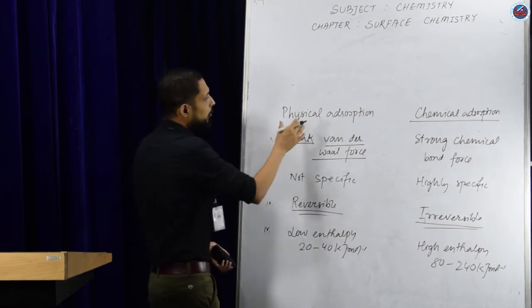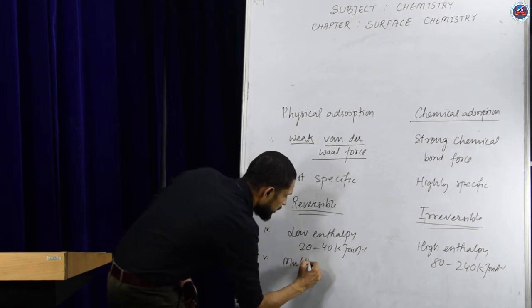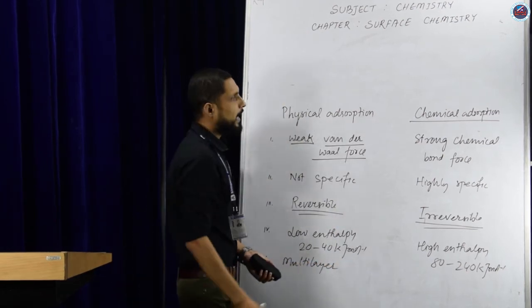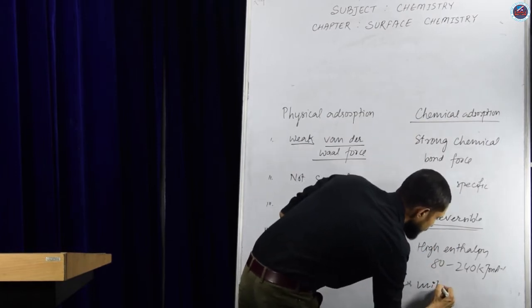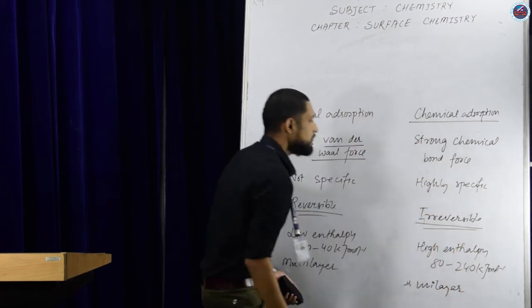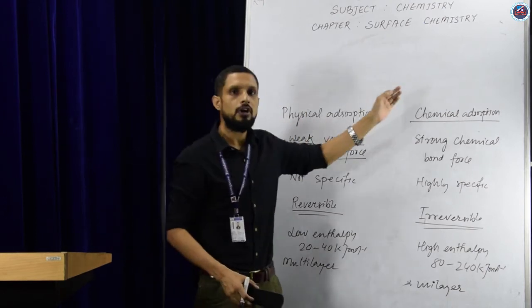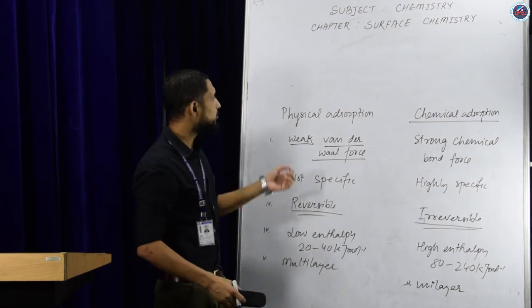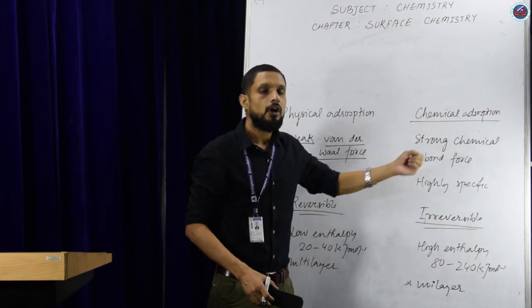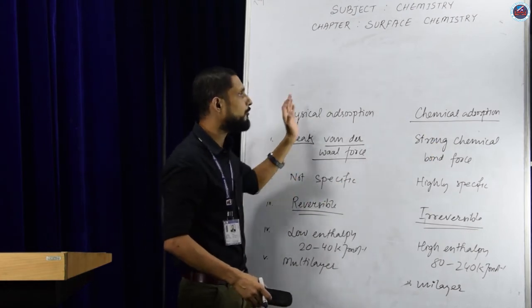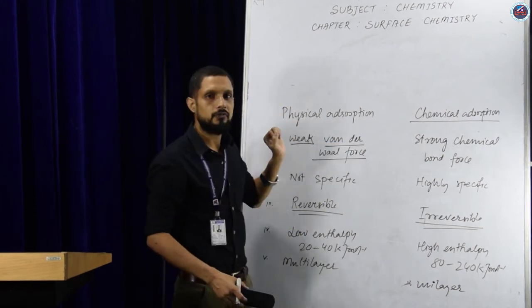Fifth: physical adsorption is multi-layer, whereas chemical adsorption is mono-layer. In the exam, you might be asked to write the difference between physical adsorption and chemical adsorption, or what is meant by physisorption or chemisorption, or to explain any two points of difference. So this topic is very important from the exam point of view.